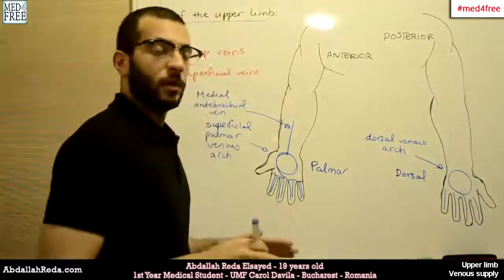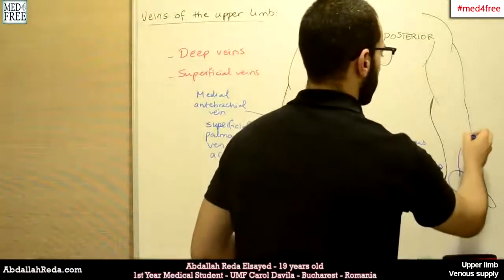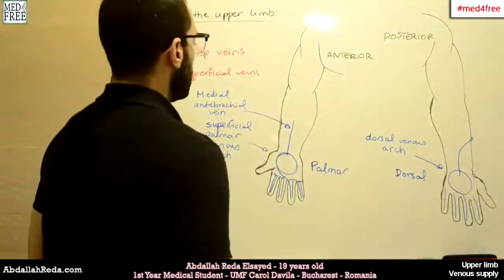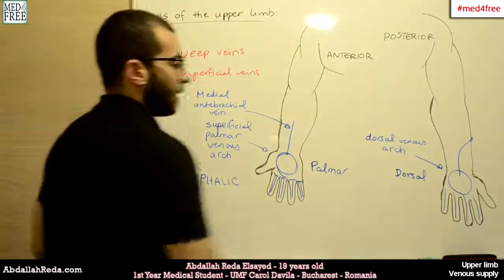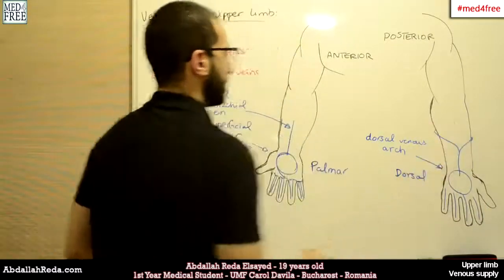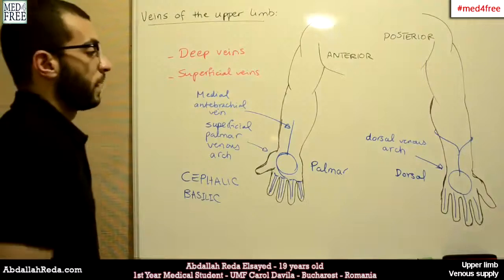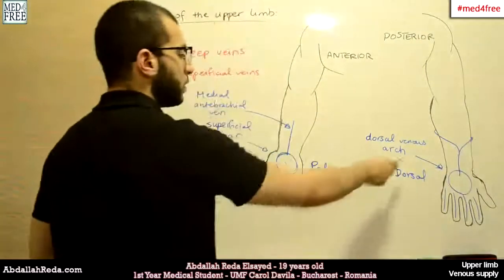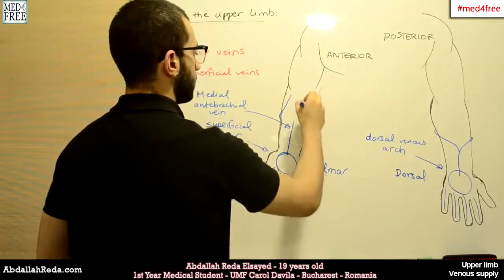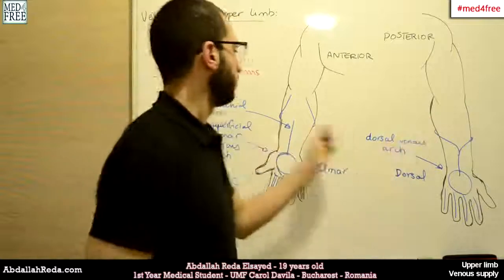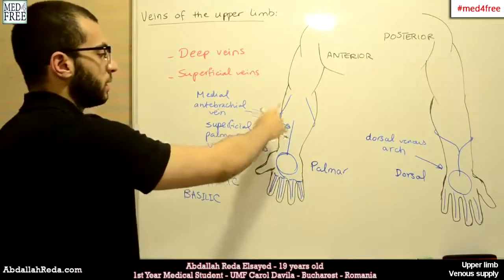The dorsal venous arch gives rise to two very important veins. One goes laterally and is called the cephalic vein, and the other goes medially and is called the basilic vein. These two veins loop from the dorsal side to the anterior side. On the medial side we have the basilic vein, and on the lateral side we have the cephalic vein.